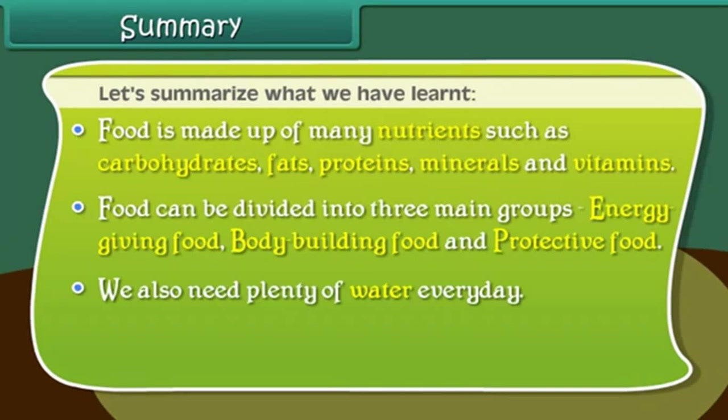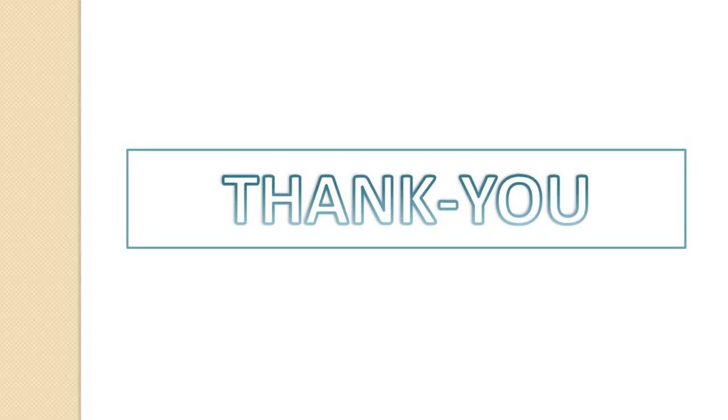Now let's summarize what we have learnt today. Food is made up of many nutrients such as carbohydrates, fats, proteins, minerals and vitamins. Food can be divided into three main groups: energy giving food, body building food and protective food. We also need plenty of water every day. In our next class we will study balanced diet, methods of preservation of food, and why we should avoid wastage of food. Thank you, that's all for today.